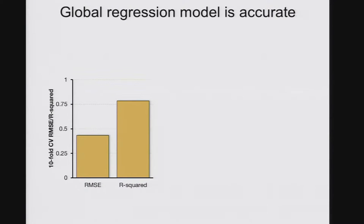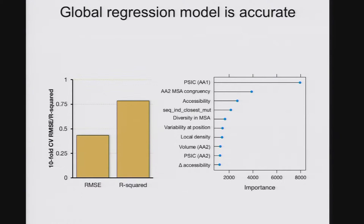We used a decision-tree-based machine learning algorithm to train a global regression model, meaning we're trying to predict the actual magnitude of a mutation's effect relative to wild type. This is the performance of the model under cross-validation. We can actually capture most of the variance in the training dataset with our procedure. It turns out that site-specific conservation and structural information — namely solvent accessibility — are the most important features, which is not surprising; that's what many others have found.